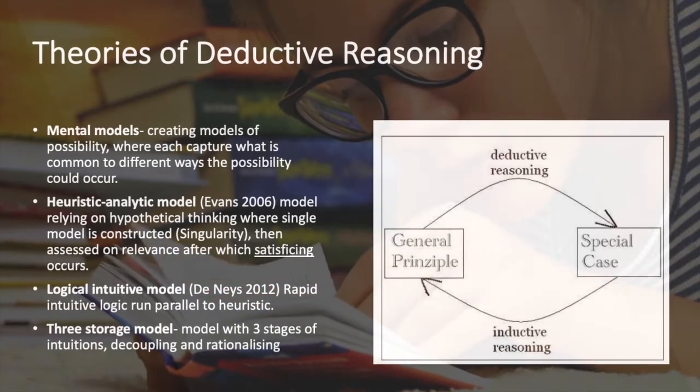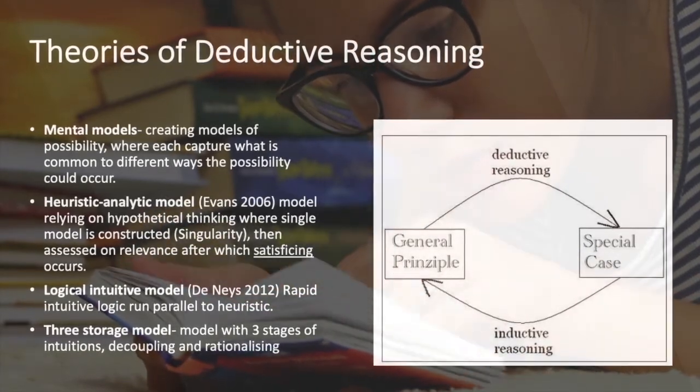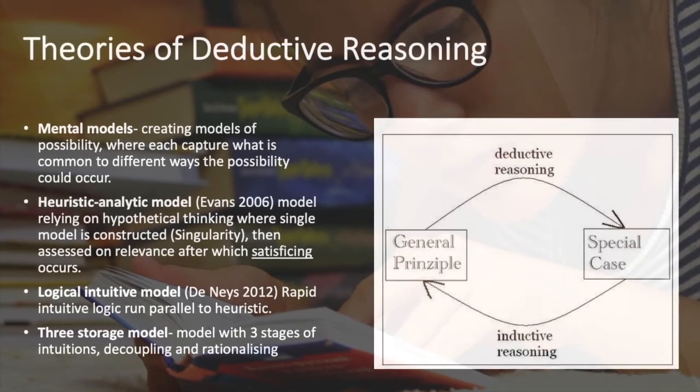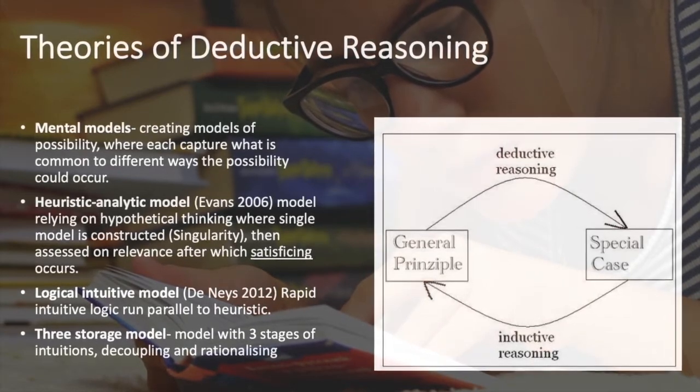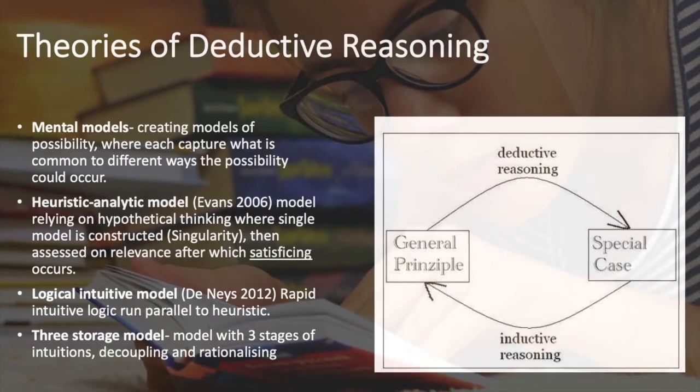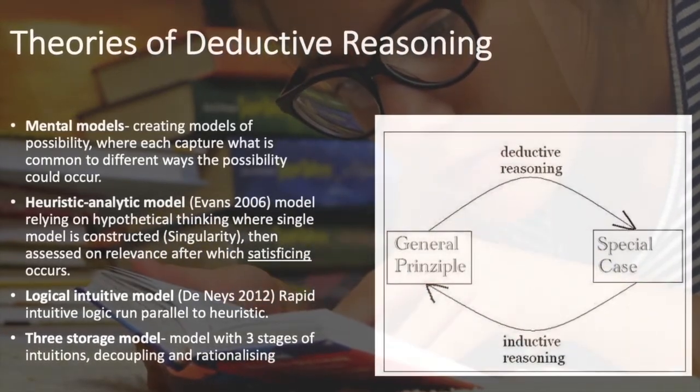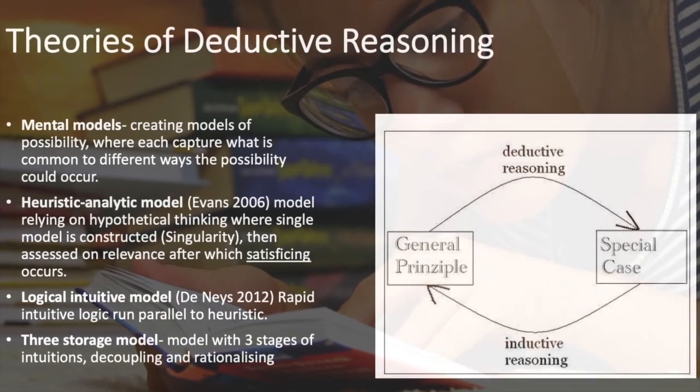Logical intuitive model: Denays 2012 proposed this model which stated that there was rapid intuitive logic that ran parallel to a heuristic. There's also the three-stage model, in which three stages of processes occur, including intuitions, decoupling, and rationalizing.